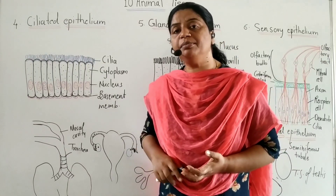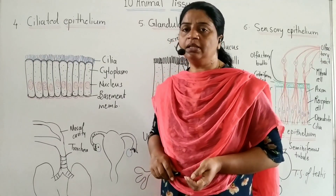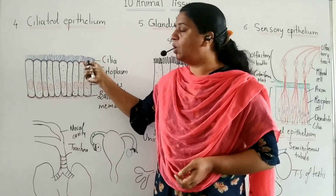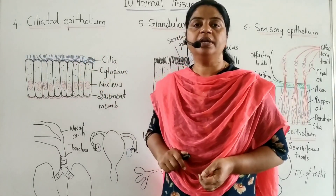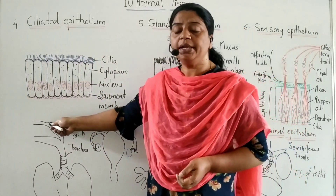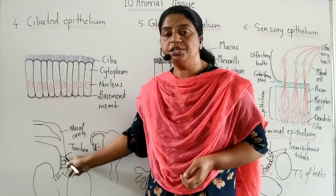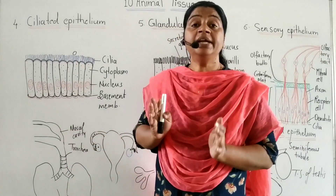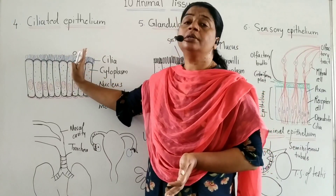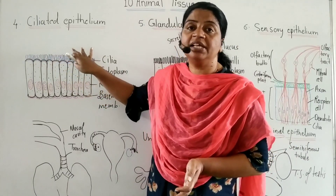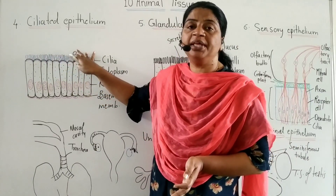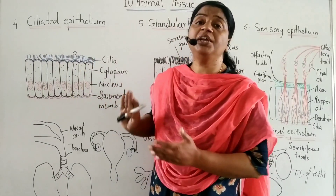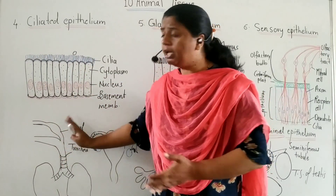In the buccal cavity, ciliated epithelium creates movement of material in a specific direction to prevent entry of foreign particles into the trachea. In the oviduct, cilia move material in a specific direction along the reproductive tract.